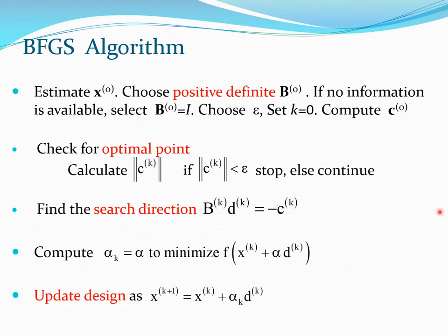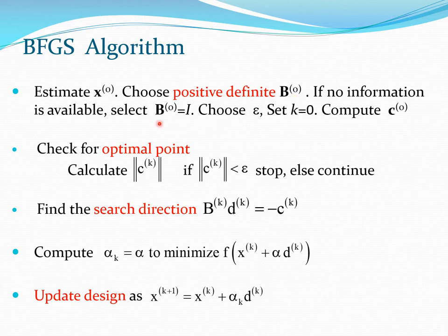Let us start with the method so you can write a program. You start by estimating a starting design — all gradient methods essentially require this. Then you choose a positive definite matrix B0, which starts off the method. If you have no matrix available, you can select B0 equal to I. You choose a small number epsilon, set k equal to 0, and compute the gradient vector at x0, which we call c0.